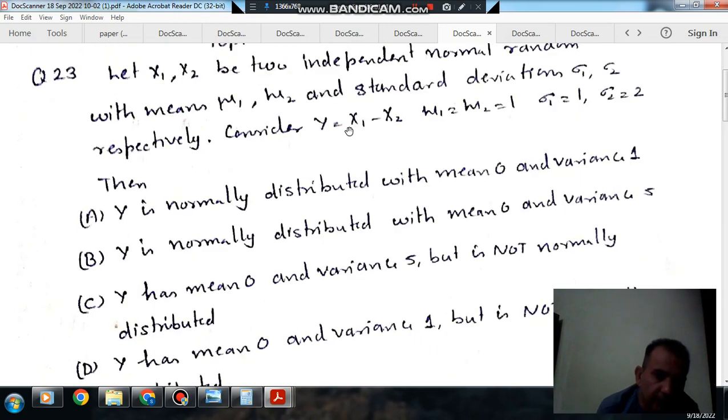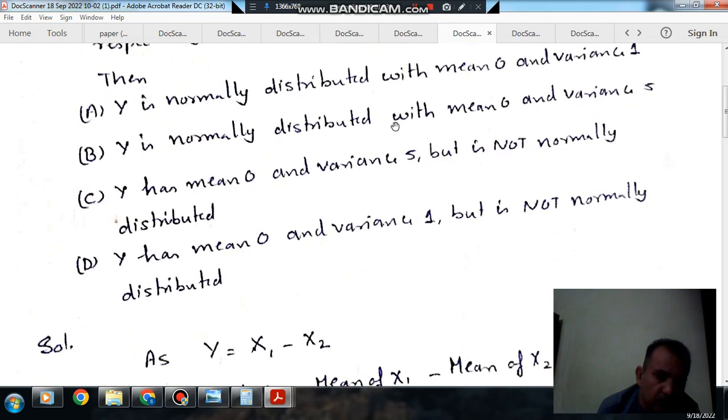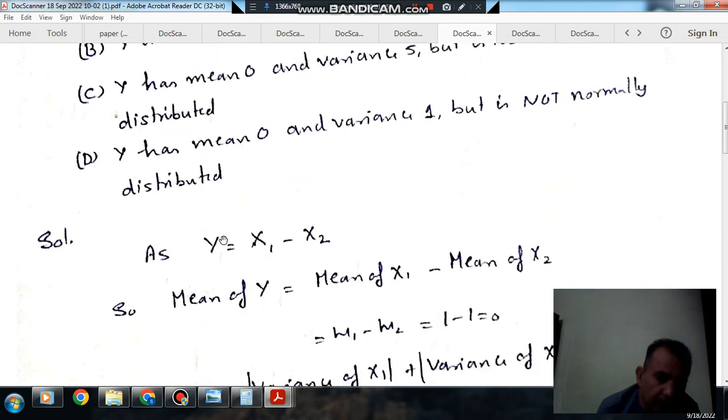So here Y is x1 minus x2. As Y equals x1 minus x2, the mean of Y should equal the mean of x1 minus the mean of x2.